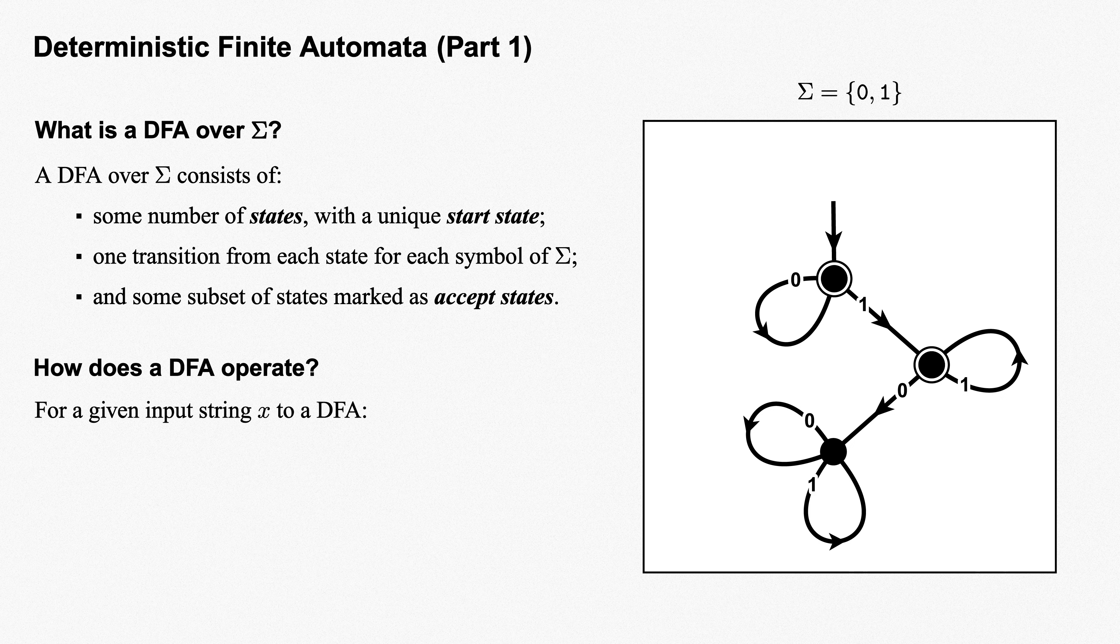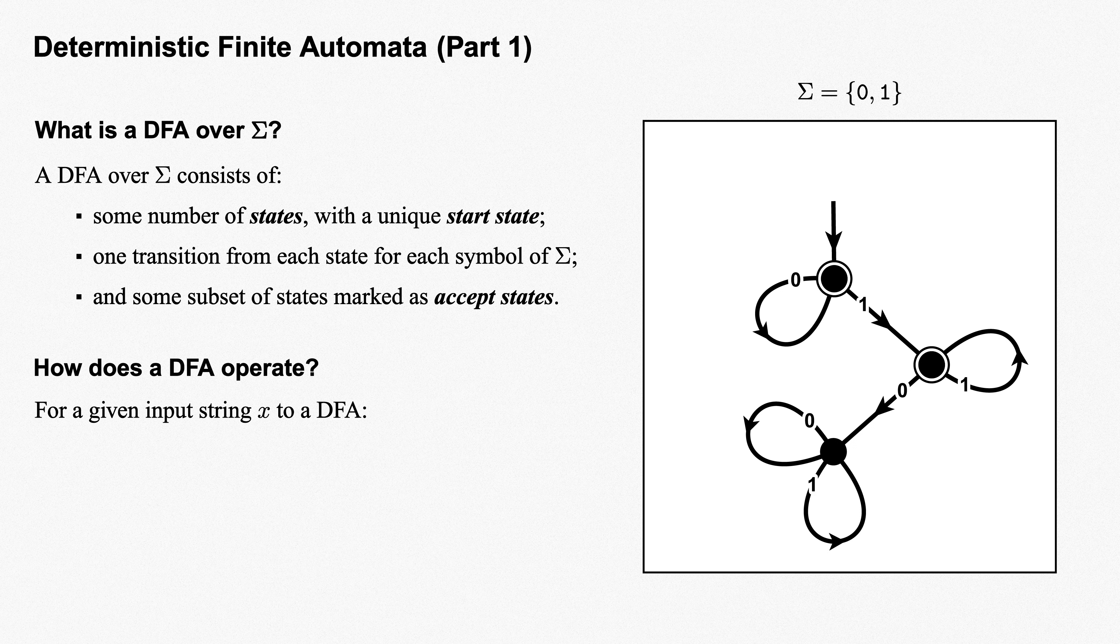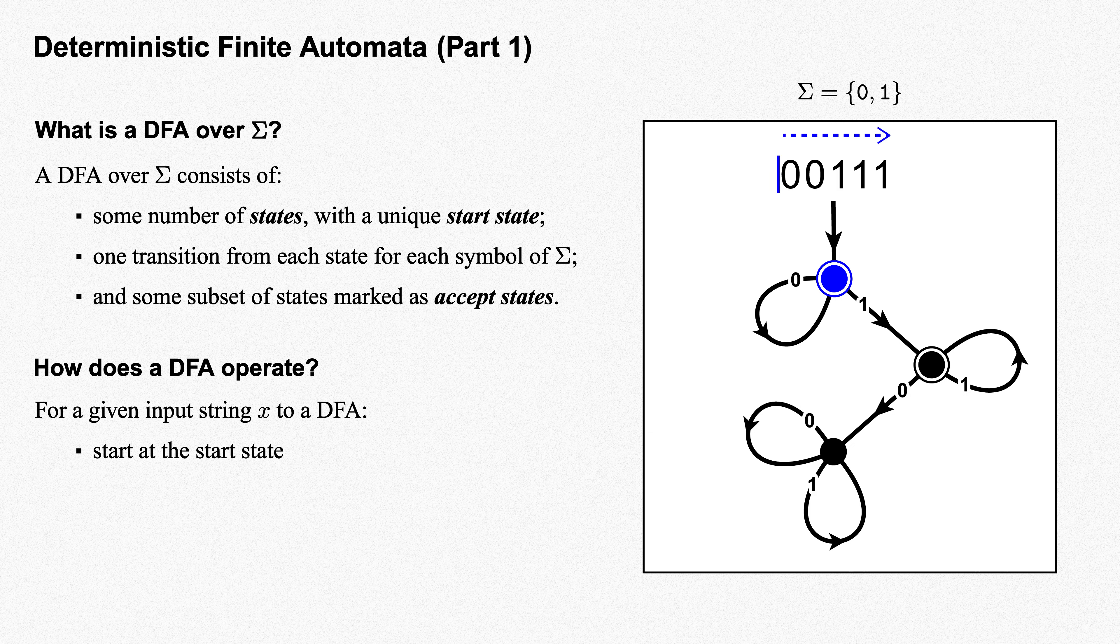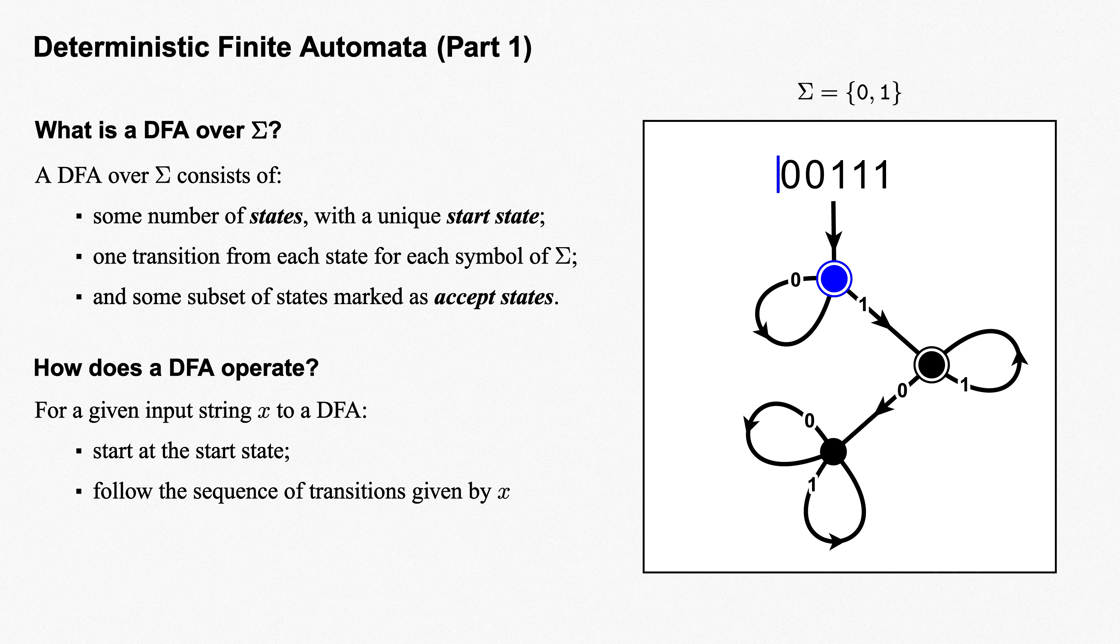Now, given an input string x, how does this DFA operate? The answer is quite simple and intuitive. We'll illustrate with the input 00111. We start unsurprisingly at the start state. Let's mark our current state in blue. Now we read the symbols of our input string, one symbol at a time, from left to right. Each one tells us which transition to follow from our current state.